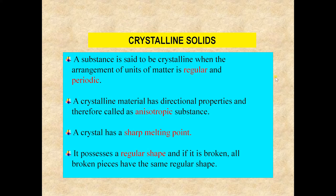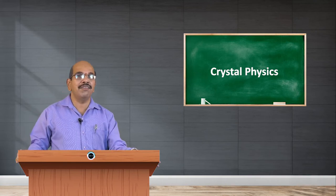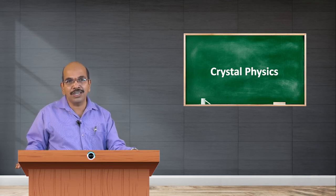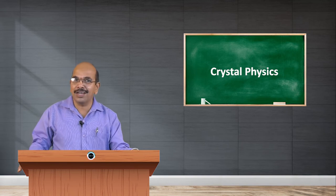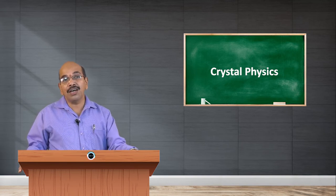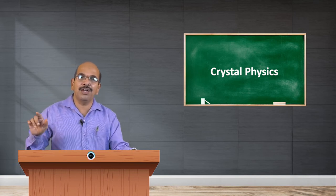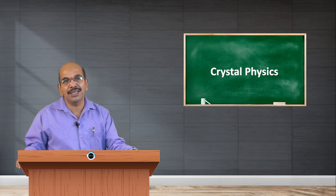A substance is said to be crystalline when the arrangement of units of matter is regular and periodic. A crystalline material has directional properties and is therefore called an anisotropic substance. A crystal has a sharp melting point, possesses a regular shape, and if broken, all broken pieces retain the same regular shape. Inside a crystal, the velocity of light may be different in different directions — this is the directional property. Crystals have a fixed melting point, for example 90.16 degrees centigrade.